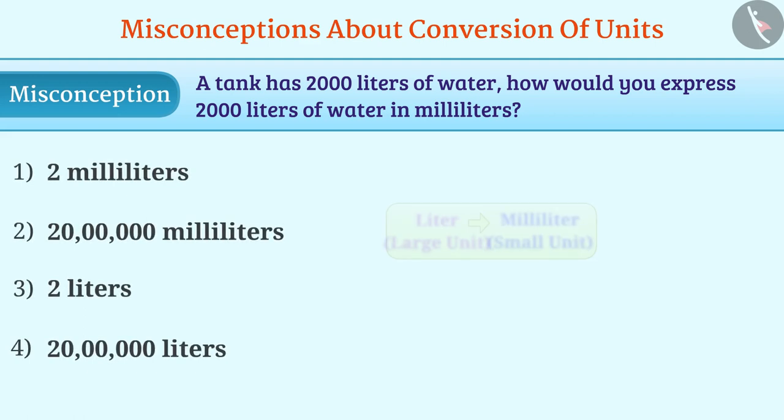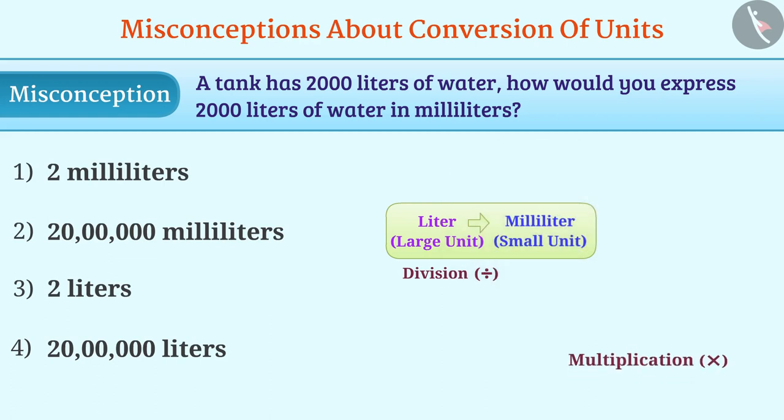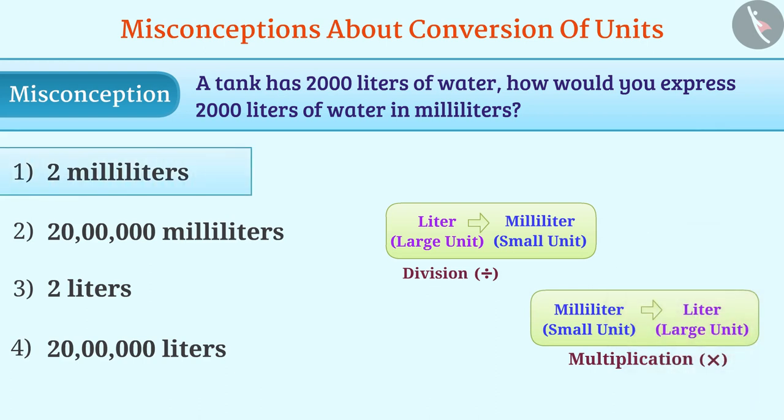Many times, it is misunderstood that division is done when converting to small units, and multiplication when making changes to larger units. Option 1 from this understanding is a wrong answer. Similarly, sometimes the unit is ignored or it is mistaken.